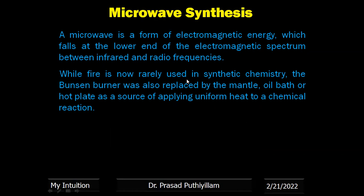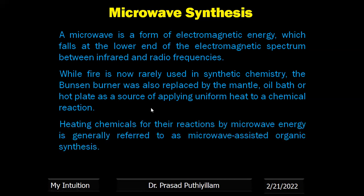Earlier days we used fire as the form of heat energy to do organic synthesis. Then it was replaced by Bunsen burner, then by mantle and oil bath, and hot plate. But these methods do not provide uniform heating, whereas uniform heating is possible with microwave energy. Heating chemicals for their reaction by microwave energy is generally referred to as microwave assisted organic synthesis.